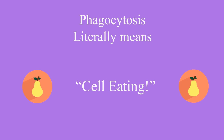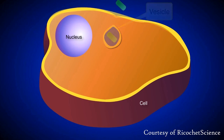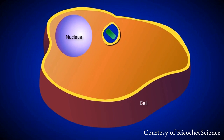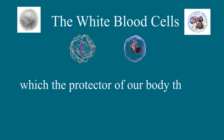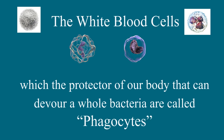Phagocytosis literally means cell eating. It is a form of endocytosis in which large particles such as a cell or cellular debris are transported into the cell. The white blood cells, which are the protectors of our body that can devour a whole bacteria, are called phagocytes.